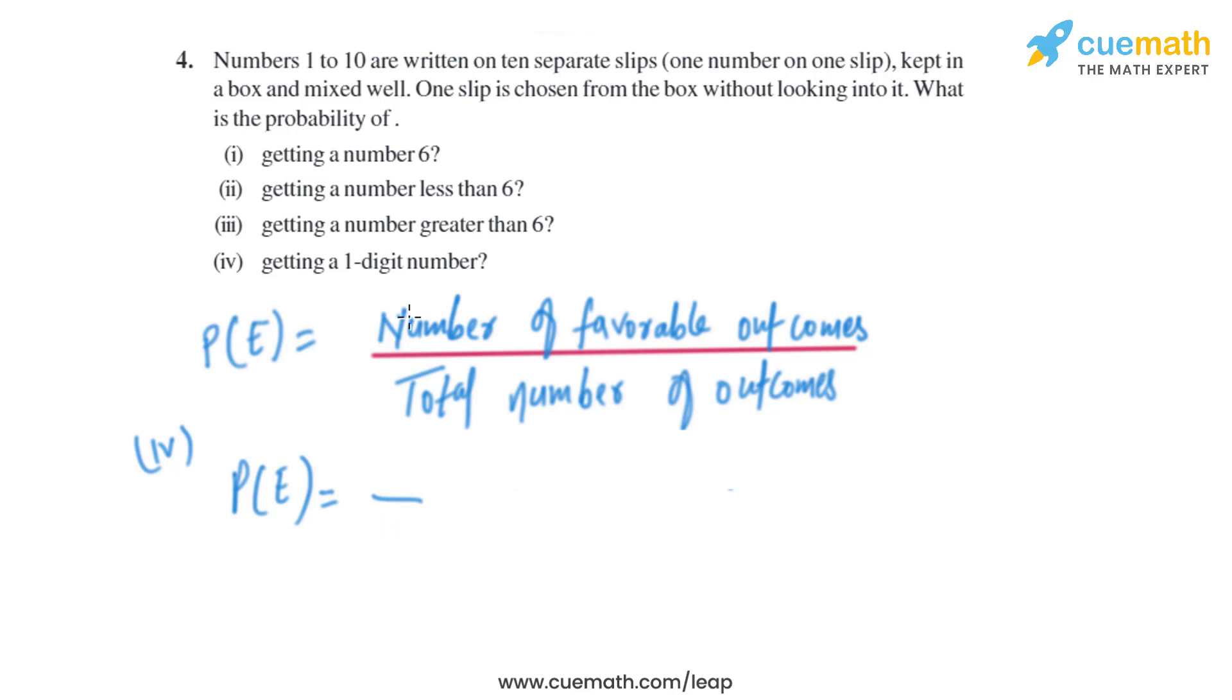Now let's have a look into the fourth part: getting a one-digit number. A one-digit number are 1, 2, 3, 4, 5, 6, 7, 8, and 9. So the number of favorable outcomes are basically 9 divided by the total number of outcomes, that is 10. So the probability of getting a one-digit number is 9 by 10.